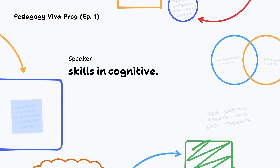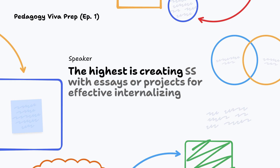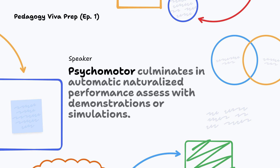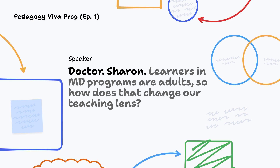In the cognitive domain, the highest level is creating — assess with essays or projects. For affective, internalizing values — use reflections or attitude scales. Psychomotor culminates in automatic, naturalized performance — assess with demonstrations or simulations.